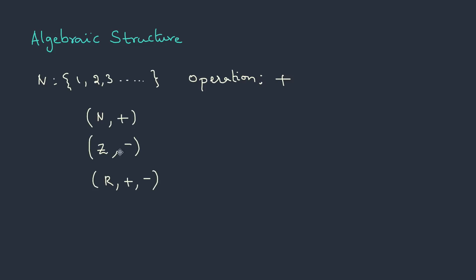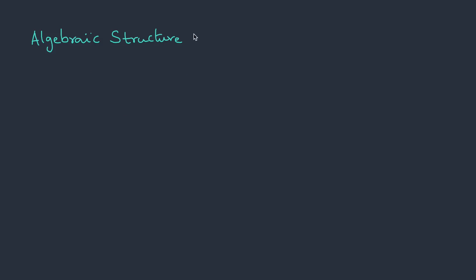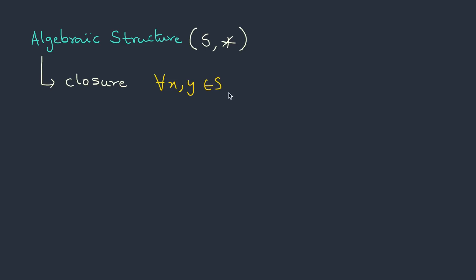If these structures follow some properties, we give them special names. Say we have a structure S with operation star (which could be addition, subtraction, or anything). If we pick any two elements x and y belonging to this set and perform the star operation, and x star y also belongs to the set, then the structure follows the closure property.